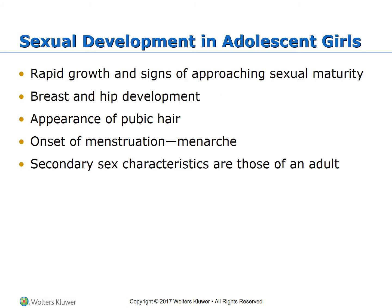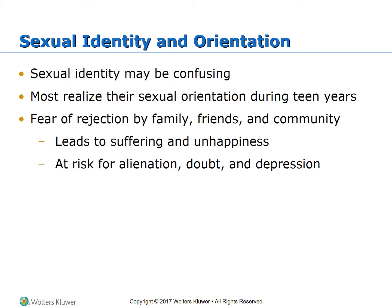Sexual development in adolescent girls: rapid growth and signs of approaching sexual maturity. Breast and hip development may be noticeable. Appearance of pubic hair. Onset of menstruation — their menarche may be irregular and their normal cycle may not be established for a few years. Secondary sex characteristics are those of an adult by age 14. Few girls grow in height after 14. Key topics to remember: breast and hip development, appearance of pubic hair, and irregular menstruation.